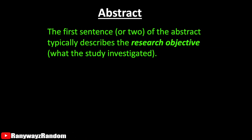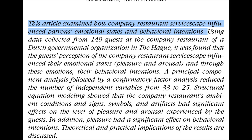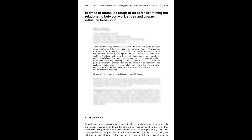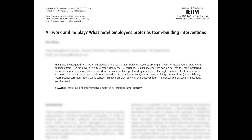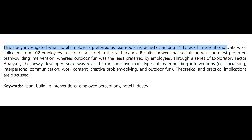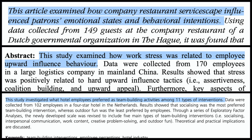The first sentence usually tells what the research objective was. For example, one paper's abstract stated: 'This article examined how company-restaurant servicescape influenced patrons' emotional states and behavioral intentions.' Another example: 'This study examined how work stress was related to employees' upward influence behavior.' A third: 'This study investigated what hotel employees preferred as team-building activities.' In all three examples, the first sentence clearly describes what the research study set out to investigate.